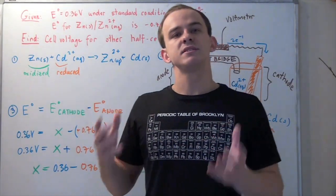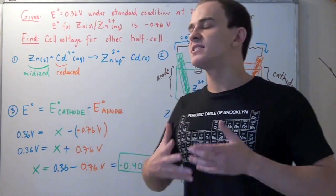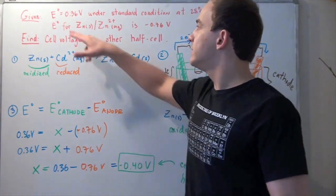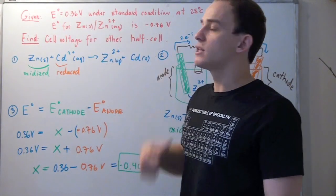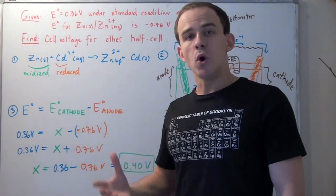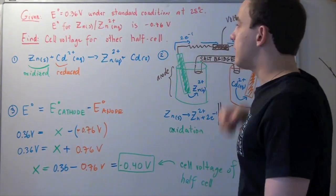We begin with an electrochemical cell composed of cadmium and zinc. We are given the cell voltage or electromotive force of our cell to be 0.36 volts under standard conditions—that means one bar pressure and one molar concentration at 25 degrees Celsius.